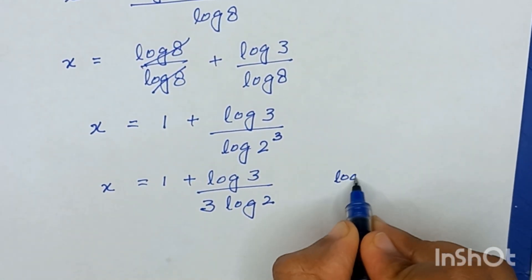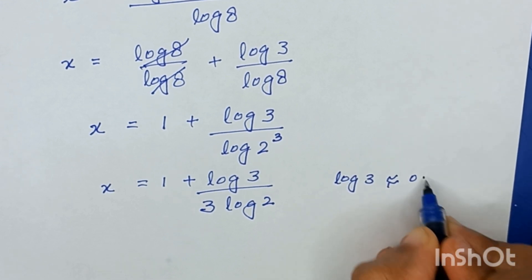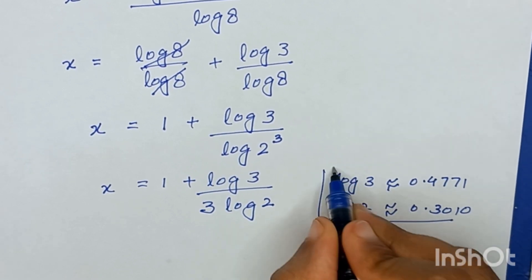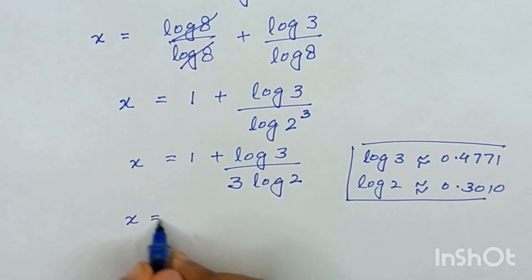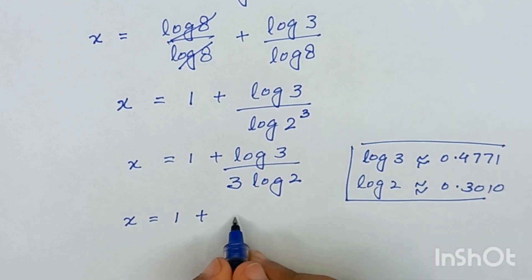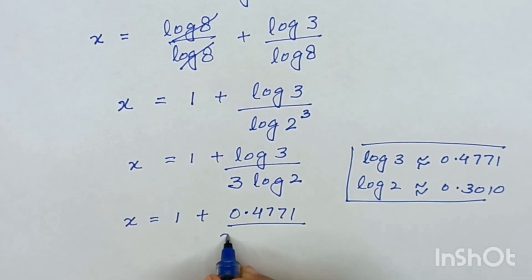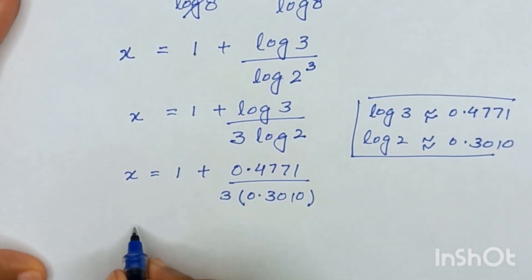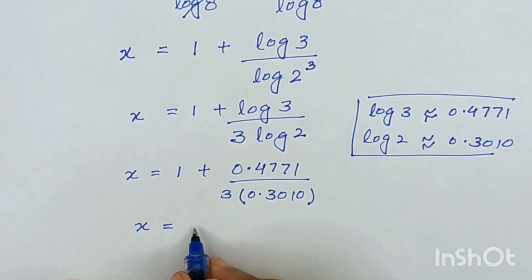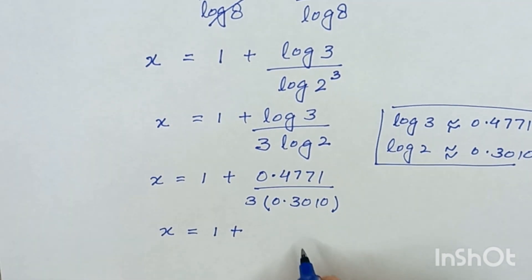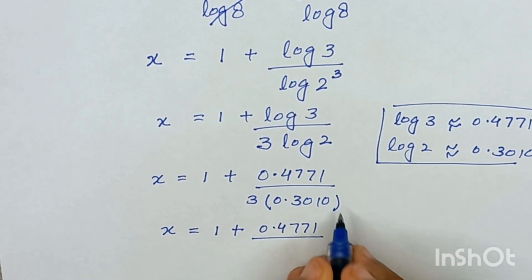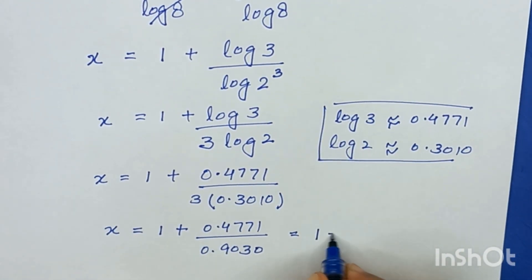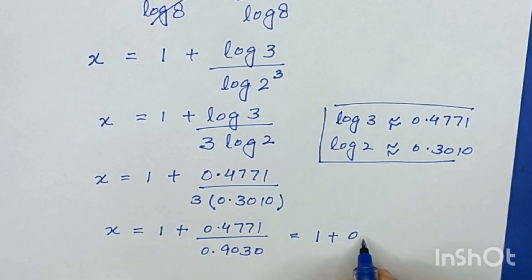Log of 3 is approximately equal to 0.4771 and log of 2 is approximately equal to 0.3010. Substituting these values, x is equal to 1 plus 0.4771 divided by 3 times 0.3010, which is 0.9030. So x is equal to 1 plus 0.528.